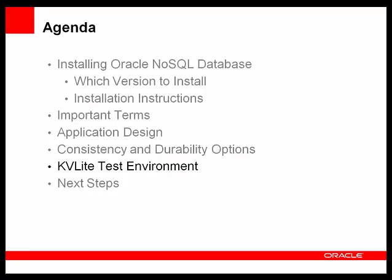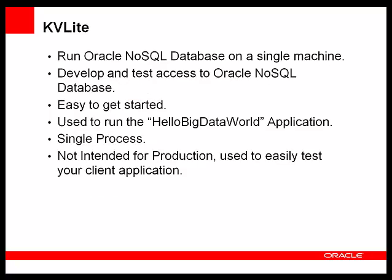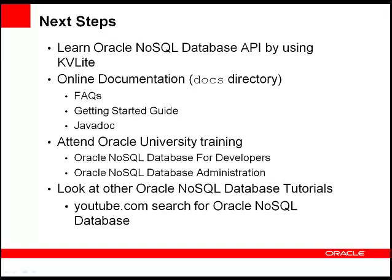Since you ran KVLite earlier in this tutorial, let's discuss what KVLite is in a little more detail. KVLite is a great way to develop and test your application logic before further testing on multiple storage nodes — a great way to get started with Oracle NoSQL Database, especially for learning the API. KVLite runs as a single storage node and single shard. I have taken applications developed and tested on KVLite and then tested them on a multiple shard system, say a 3x3, without needing to make any modifications to the code before deployment. At this point you have Oracle NoSQL Database installed on a single system, perhaps your laptop, and have confirmed it's running by starting KVLite and running one of the sample applications.